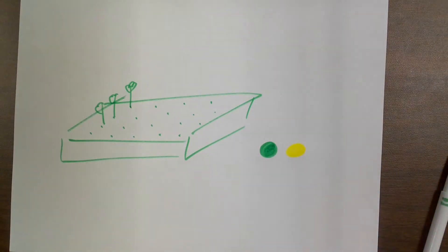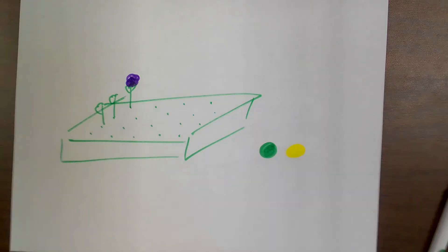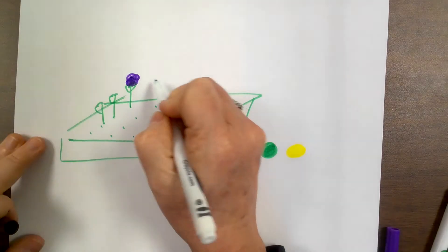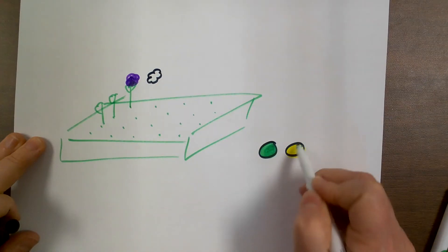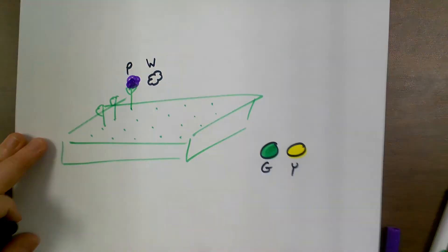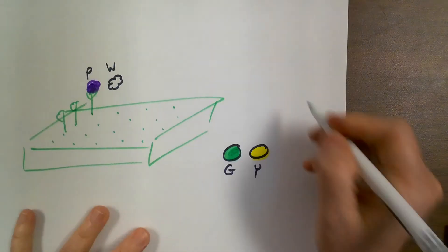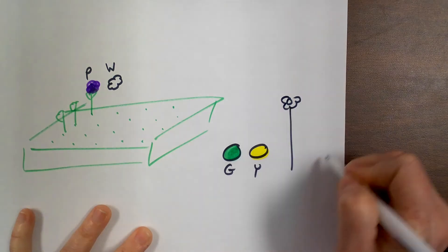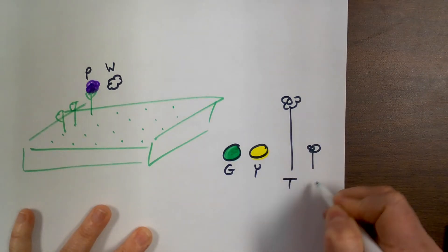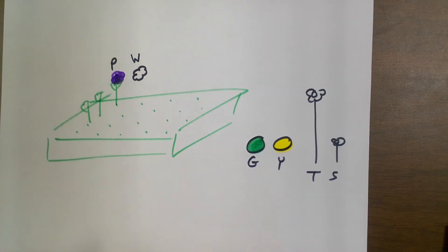He also notices that the flowers are either purple or white — no other options. So seed color is either green or yellow, flower color is either purple or white, and the plants either tend to be tall or short. It's kind of ironic that this was the plant he was working with, because it turned out to be the perfect test subject for his observations.